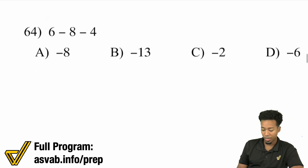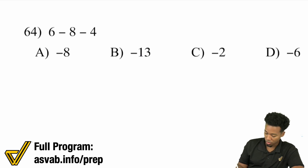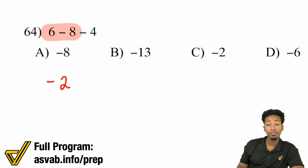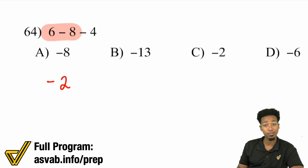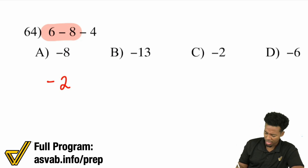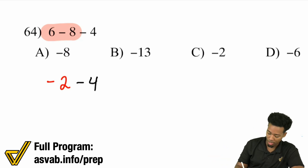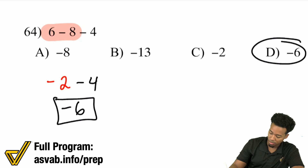Number 64: 6 minus 8 minus 4. Since it's subtracting, we'll just go left to right. 6 minus 8 will be negative 2 — 8 minus 2 is 6, so 6 minus 8 is negative 2, just think about it backwards. And then from there, we subtract the 4. Since we're already back 2, going back 4 more, we have a total of going back 6 — negative 6.